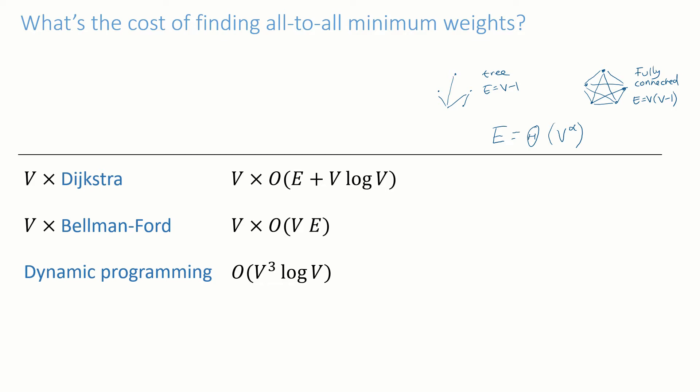So for E equals big theta of V to the power of alpha, here are the running times. And this way of writing it makes it clear that in all cases Dijkstra's algorithm is best. But of course the downside of Dijkstra's algorithm is that it only works on graphs where all the costs are above or equal to zero, whereas the other two work when some costs are negative.